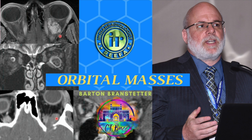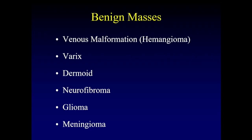Thankfully, in the orbit, benign masses are much more common than malignant masses. The most common benign mass is the venous malformation or hemangioma. Varices of the veins within the orbit are also very common, and then we get into the less common things: dermoids, neurofibromas. We'll also talk about gliomas and meningiomas around the optic nerve and how we can distinguish those two lesions.